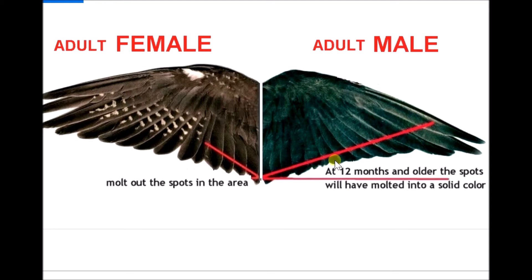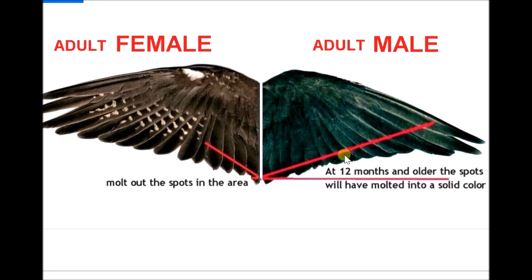Before, when it was less than one year, you could have seen spots in this segment. Once the male grows after one year, the spots will start to reduce and it will become a solid color, so you will not observe any spots in the adult male bird.